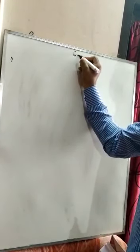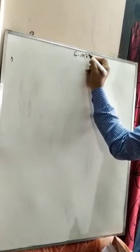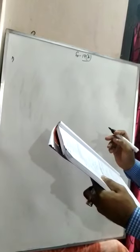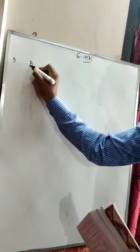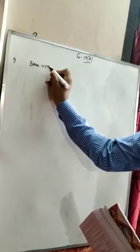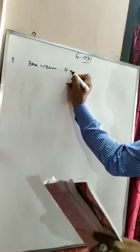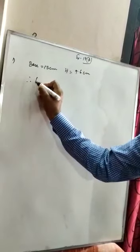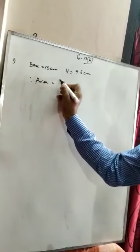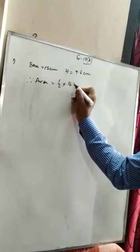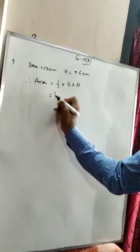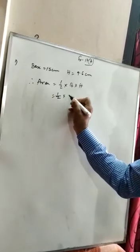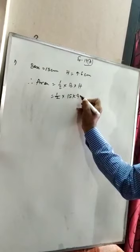Exercise 17A. Question number 1: find the area of the triangle whose base is 15 cm and corresponding height is 9.6 cm. So, base equal to 15 cm, height equal to 9.6 cm. Using the formula, area equal to half into base into height, we can do half into 15 into 9.6.